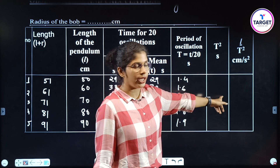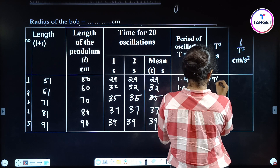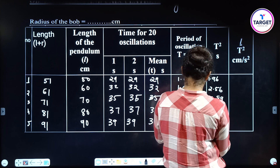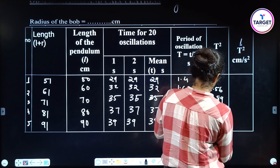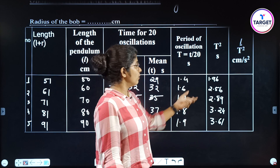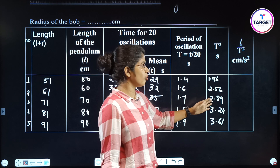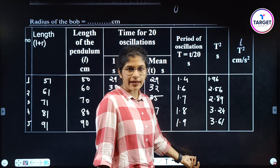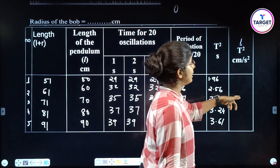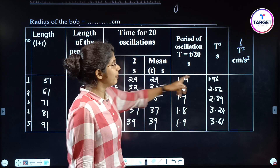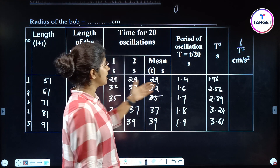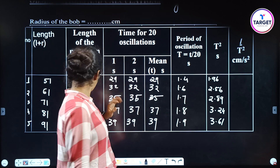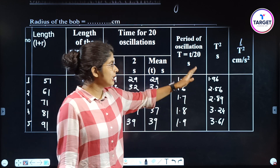After that we have to square the T values. When we square them, we get: 1.96, 2.56, 2.89, 3.24, 3.61. So the L/T² values are: 50/1.96, 60/2.56, 70/2.89, 80/3.24, and 90/3.61. We get similar values each time.